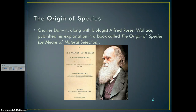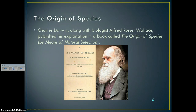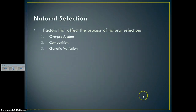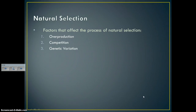Charles Darwin, along with biologist Alfred Russell Wallace, published his explanation in a book called The Origin of Species by Means of Natural Selection — a very long book compiled over many years. Interestingly, it wasn't until the very last page that he ever used the term 'evolution.' The book was mostly about the mechanisms of evolution: the three big ideas that drive natural selection — overproduction, competition, and genetic variation.